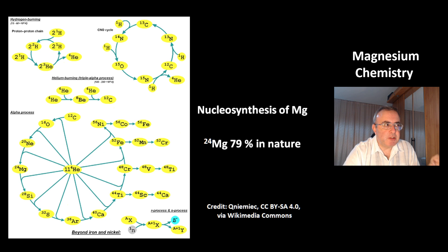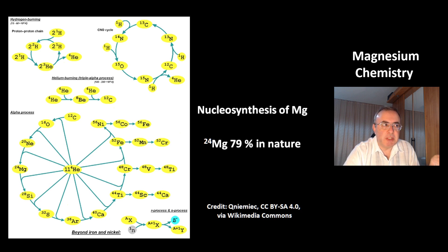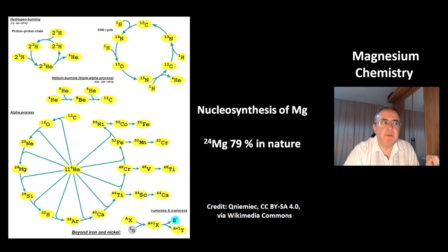At the bottom, that's the alpha process, which explains why the elements with an even number of protons are abundant — because they're made of helium, which is the second most abundant element in the universe.